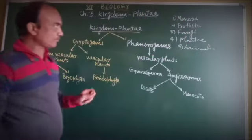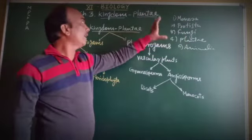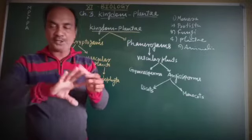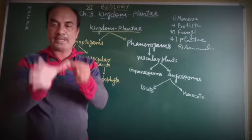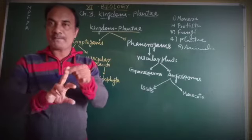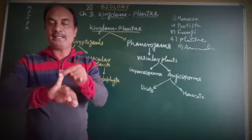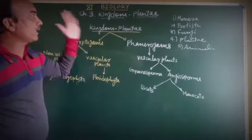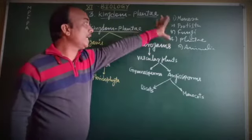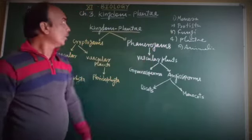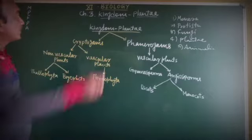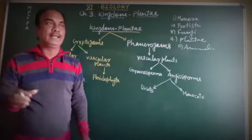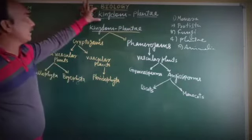So students, this is the last chapter — Kingdom Plantae. R.H. Whittaker classified organisms into the five kingdom system. Now we will study the classification and the characters of Kingdom Plantae.